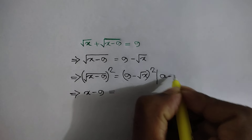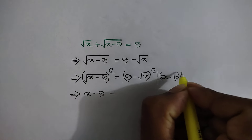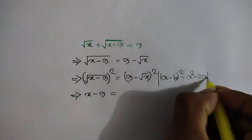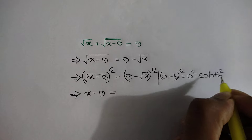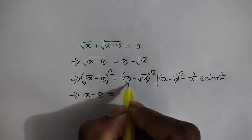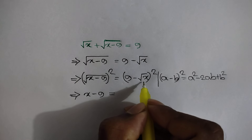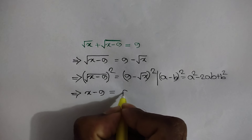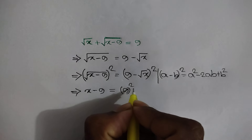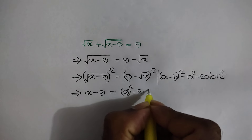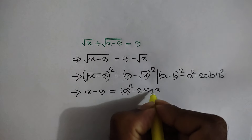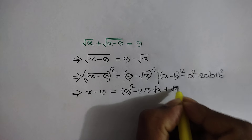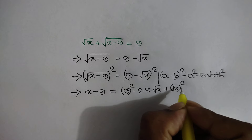a minus b whole square is equal to a square minus 2ab plus b square. Here a is equal to 9 and b is equal to root x. So we will write 9 square minus 2 into 9 times root x plus root x square.